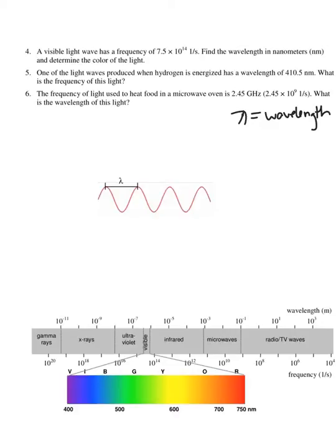Wavelength typically has some type of length or distance units, such as meters. Maybe it's some derivative of that, like nanometers, or really any length unit. But most typically you'll see meters and nanometers.